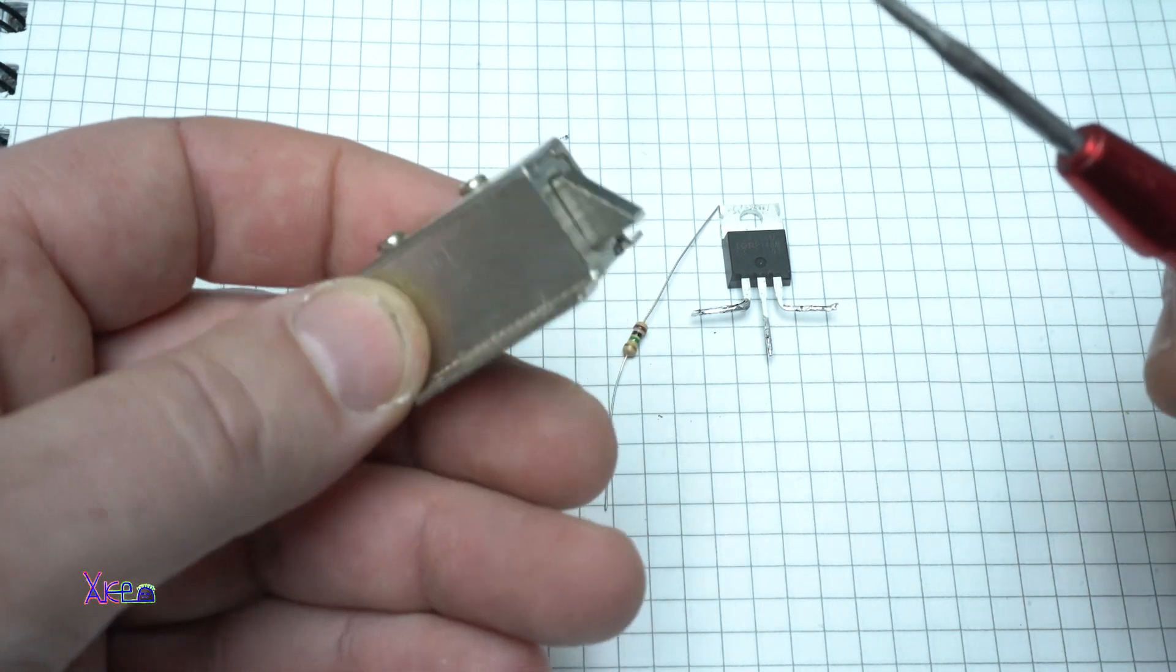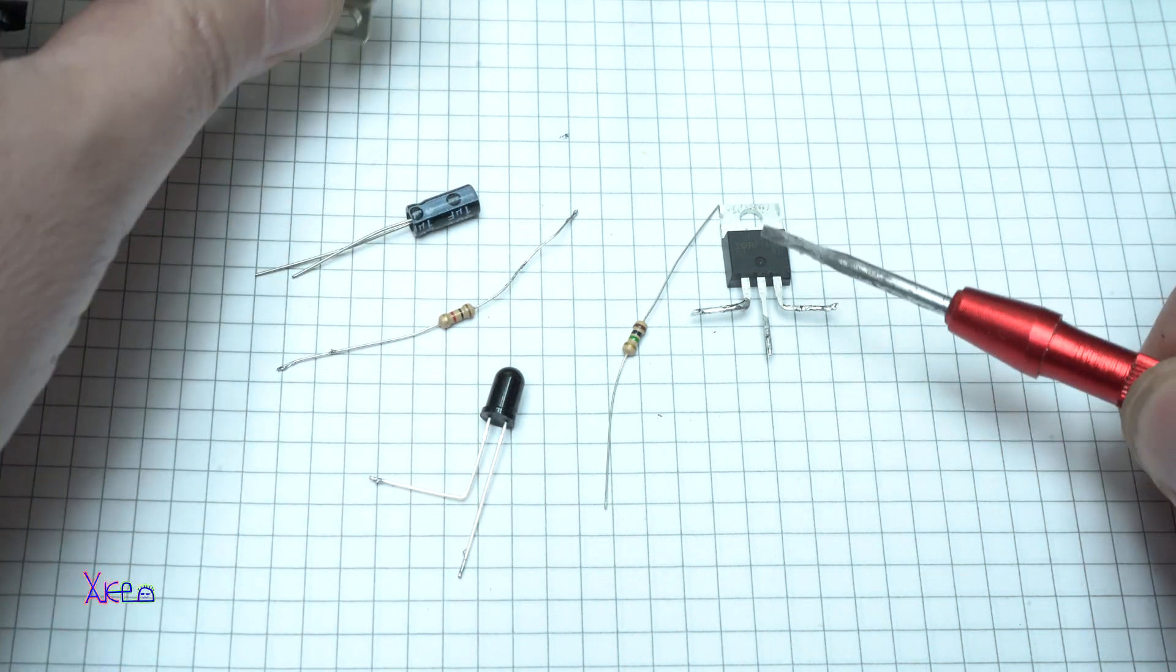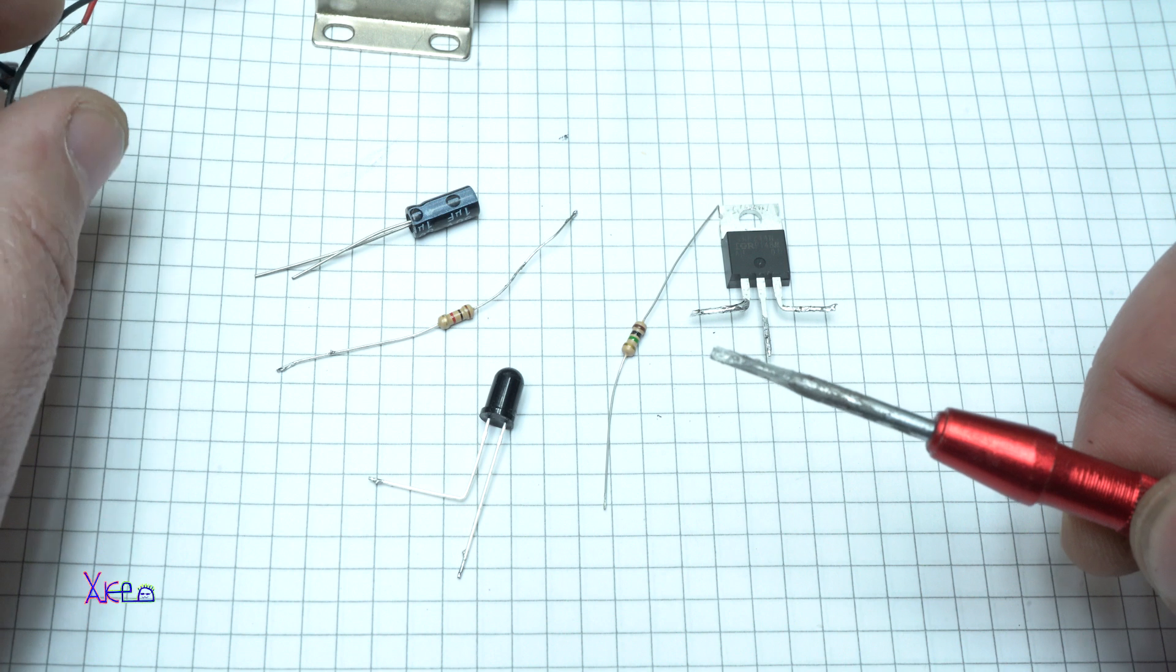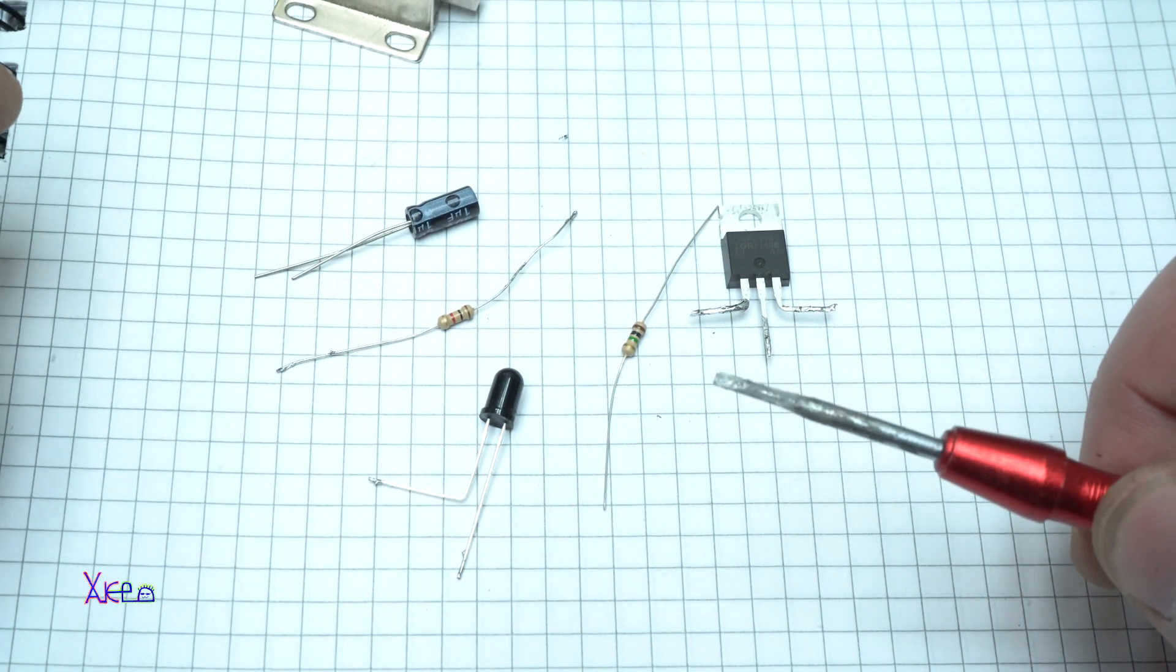And this thing is an electronic lock that will be controlled by the MOSFET and with the remote control we're going to trigger this lock. Let's build the circuit now.